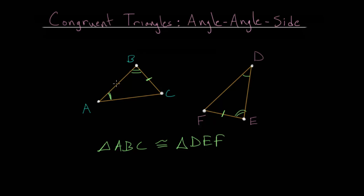So if we know two consecutive angles that match up with two consecutive angles in the other triangle, and the side length following that second angle — that second set of equal angles — if that side length is equal as well, then the two triangles are the same shape and the same size.